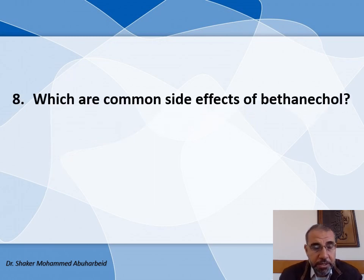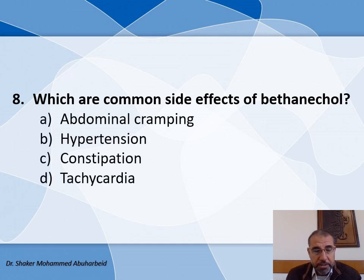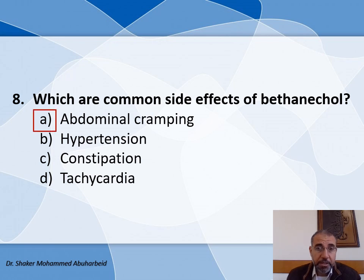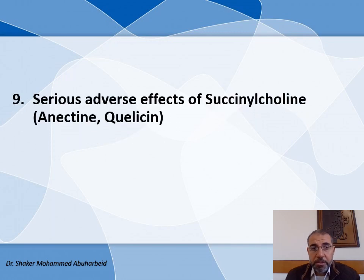Question number eight: Which are common side effects of Pilocarpine? The choices are: A) Abdominal cramping, B) Hypertension, C) Constipation, and D) Tachycardia. The common side effect is abdominal cramping — it is common in all patients who take Pilocarpine.